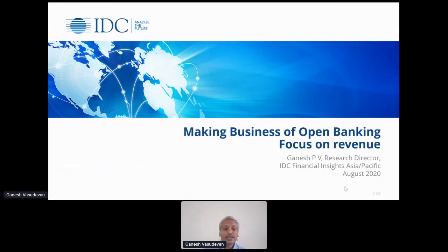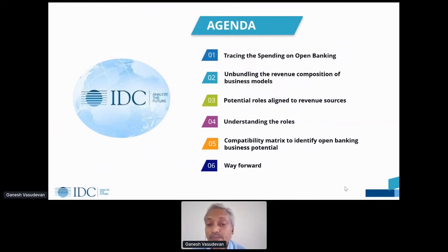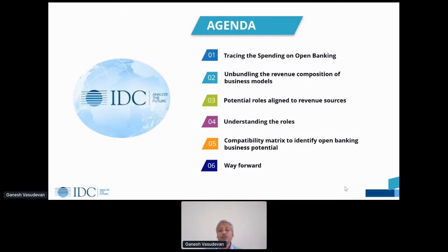Let me begin with the agenda. I have broadly split it into six segments. Initially I will talk about spending on open banking in the Asia Pacific region, then tie it up with understanding various banking business models to pursue the revenue component. We will narrow down to potential roles within those banking business models aligned to revenue sources, then have a compatibility metrics to identify potential roles, and conclude with a key highlight on execution and the way forward.